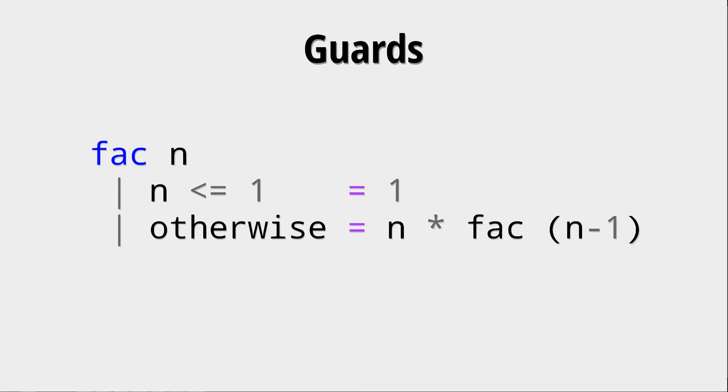Now it might be interesting to know what this otherwise is. This otherwise is just a constant which always evaluates to true. So that is why this last guard, this otherwise guard, is always taken because it always evaluates to true.